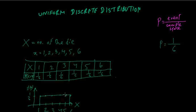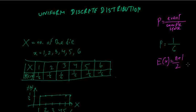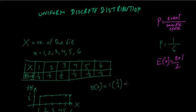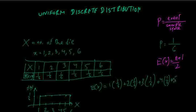Whenever you have a uniform discrete distribution, you don't have to go through the long process of calculating the expected value and variance — they have very simple formulas. The expected value is simply (n+1)/2. Let me show you the long way first: it is the sum of each random variable value multiplied by its probability.